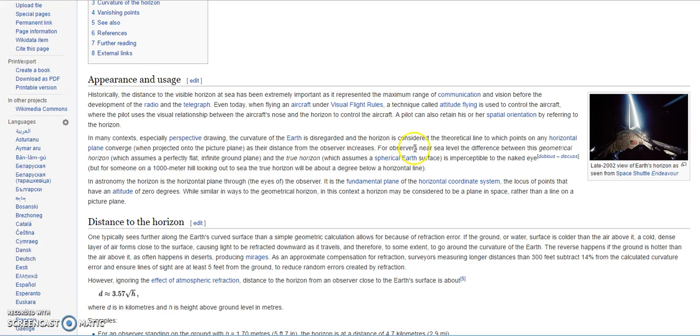For observers near sea level, the difference between the geometrical horizon, which assumes a perfectly flat infinite ground plane, and the true horizon, which assumes a spherical earth surface, is imperceptible to the naked eye. So what they're saying is you can't tell the difference because geometrically it's flat. Like I said, to say it's a sphere is pseudo geometry.